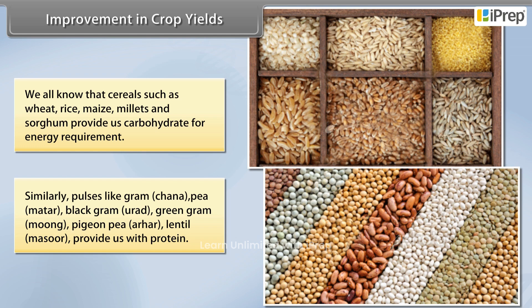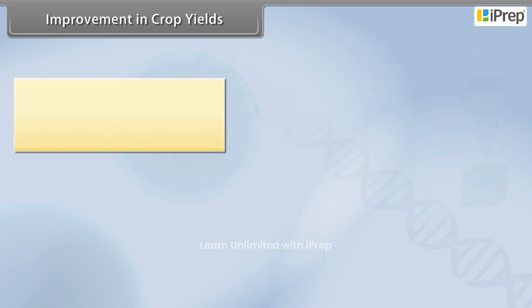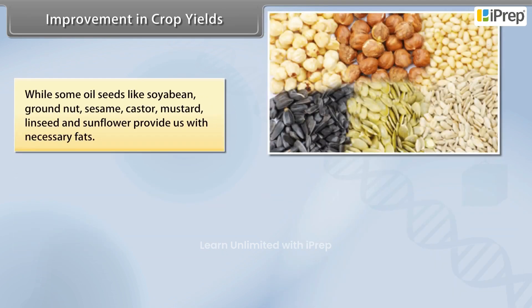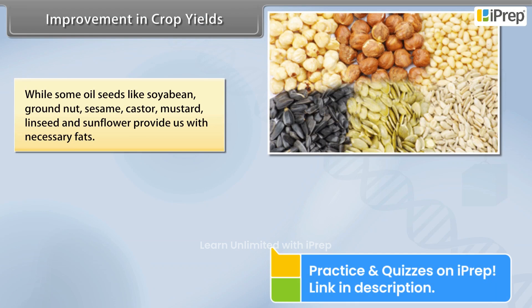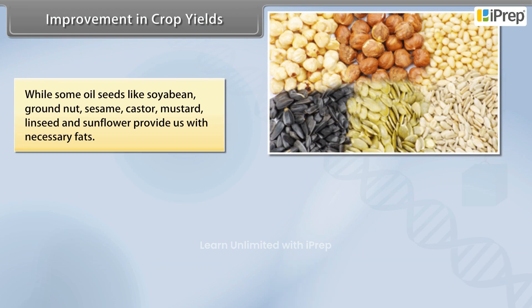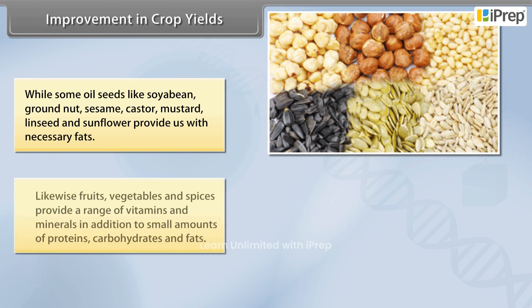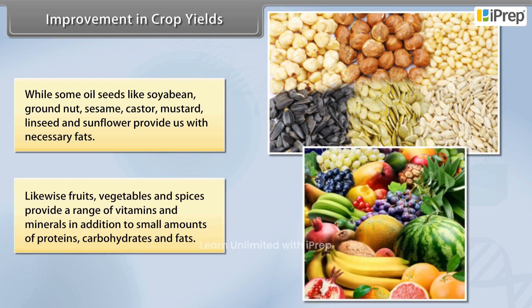Some oil seeds like soybean, groundnut, sesame, castor, mustard, linseed, and sunflower provide us with necessary fats. Likewise, fruits, vegetables, and spices provide a range of vitamins and minerals in addition to small amounts of proteins, carbohydrates, and fats.